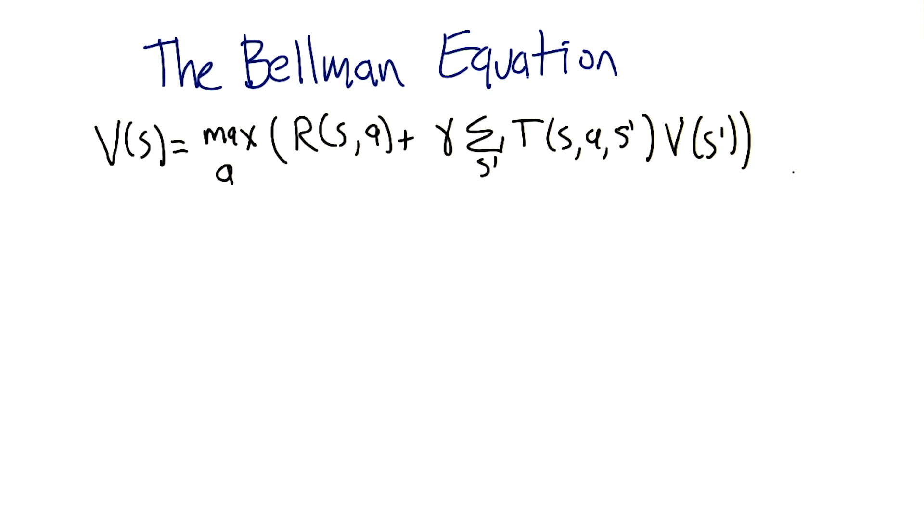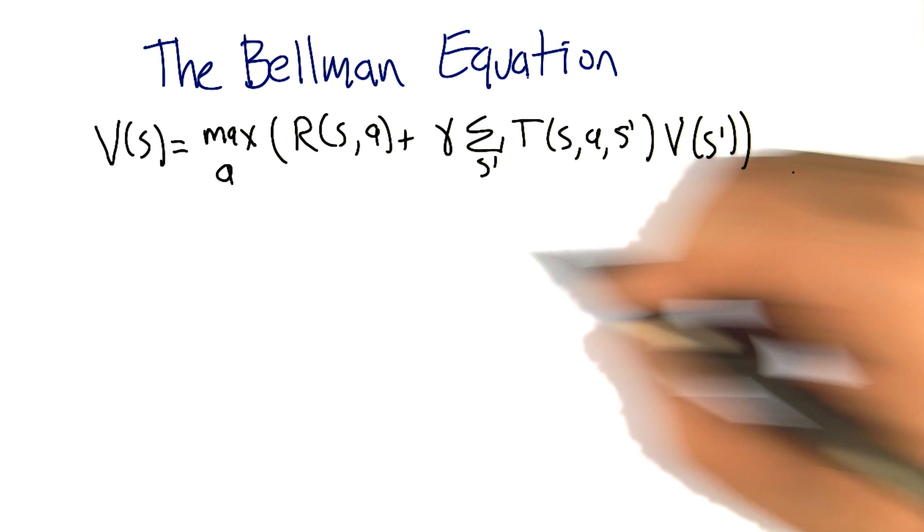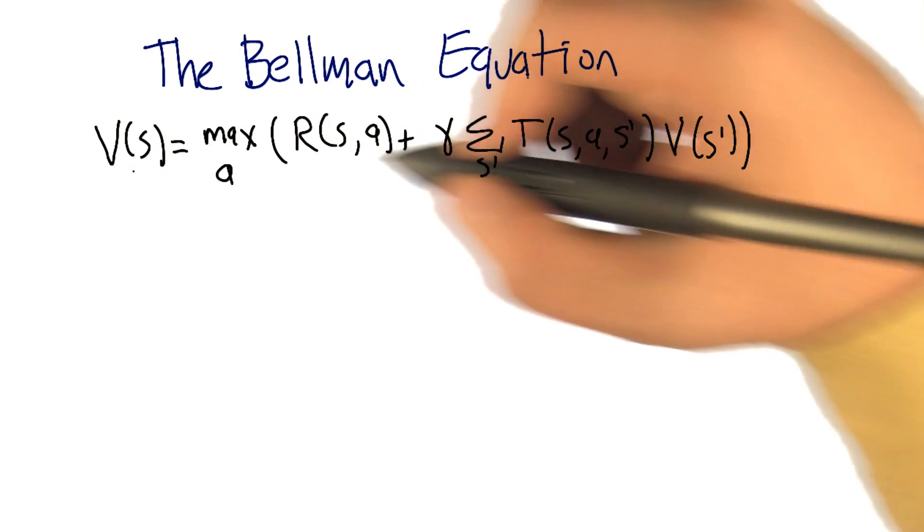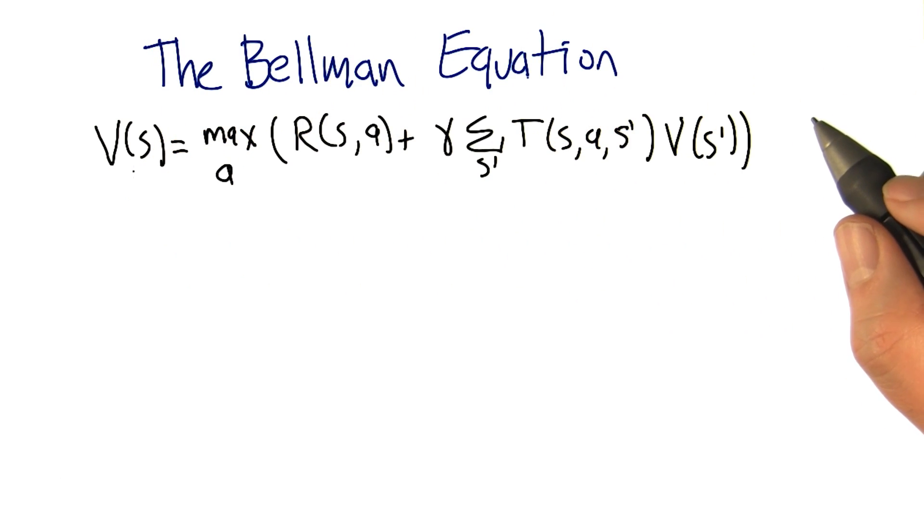So this should look familiar, right? No, it doesn't look familiar at all. I mean, there's a V, there's a max on the outside, there are more parentheses, it's a reward of SA instead of, what? You're making this up.